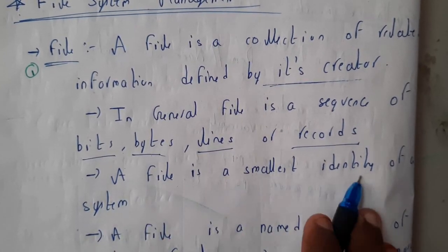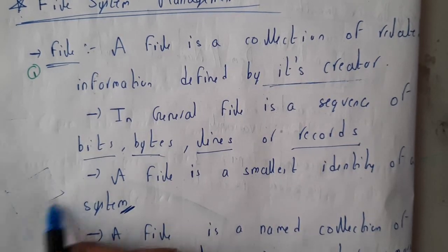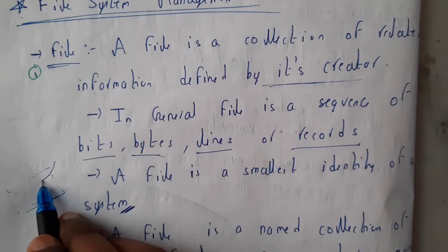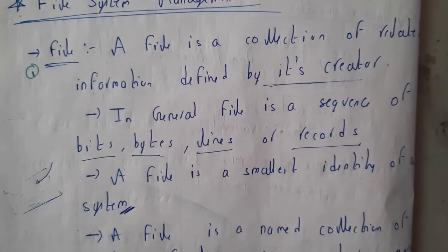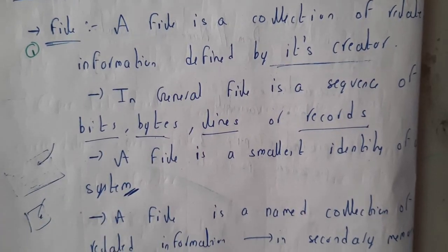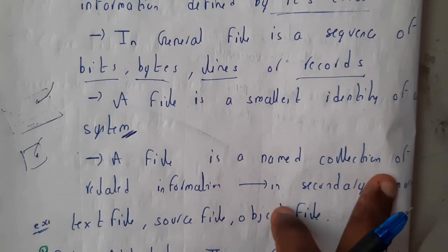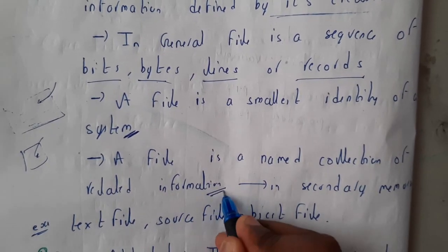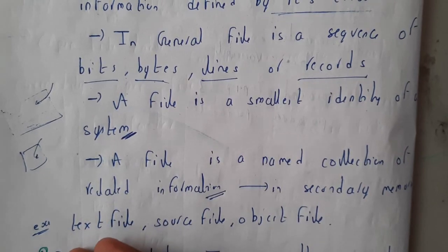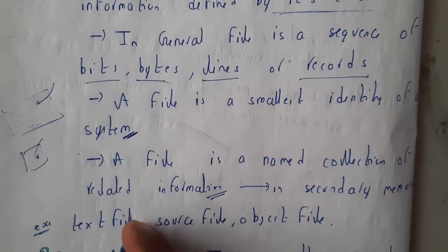A file is the smallest identity of a system. In a huge system of data, a small file is the smallest identity. Just like in chemistry, the atom is the smallest thing — in computers, files are the smallest things. A file is named as a collection of related information; whenever you are storing something, you'll be storing related information.